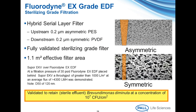As Martha will discuss Fluorodyne EX-EDF in her presentation, I should explain what it is. Fluorodyne EX-EDF is a hybrid serial layer filter that utilizes an upstream asymmetric polyethersulfone membrane over a downstream symmetric PVDF layer. The upstream PES layer is asymmetric with a narrowing pore structure as fluids pass through. The downstream PVDF layer is symmetric with a consistent 0.2 micron rated pore structure throughout. Fluorodyne EX-EDF is a fully validated sterilizing grade filter and should be employed as the final filter for high-risk emulsion solutions.